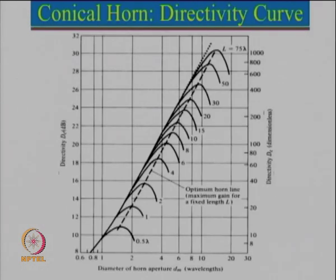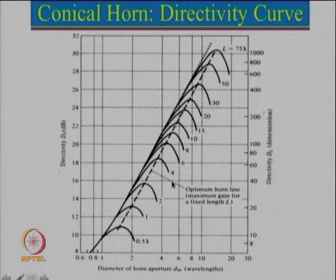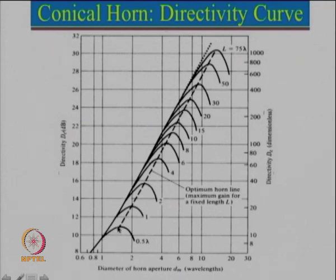For this particular case, this curve shows the directivity curve. Directivity is along one axis and this shows the diameter of the horn aperture. These are for various lengths: L equal to 75 lambda, 50 lambda, down to 0.5 lambda. For a given value of L, starting with 0.5 lambda, as we increase the diameter one can see that directivity is almost increasing linearly and then it reaches a maximum.